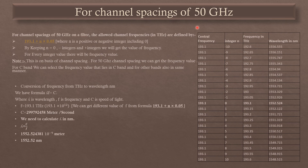For a channel spacing of 50 GHz, we repeat the same process to get different frequency and wavelength ranges. With N equal to 0, we get the center frequency; with N equal to plus 1, we get 193.15 THz; with N equal to minus 1, we get 193.05 THz. The corresponding wavelength values are obtained using the same conversion formula.